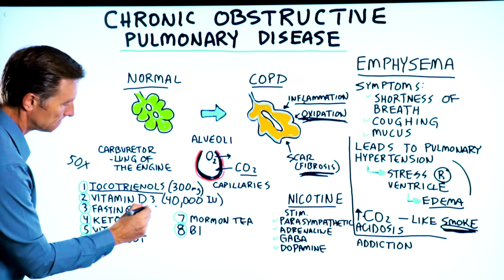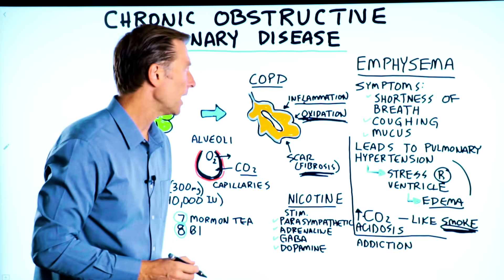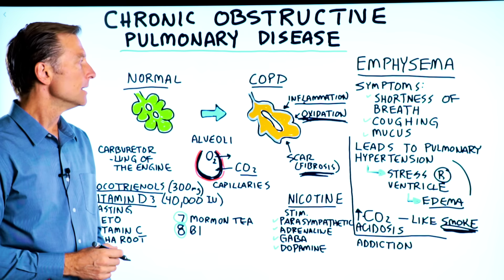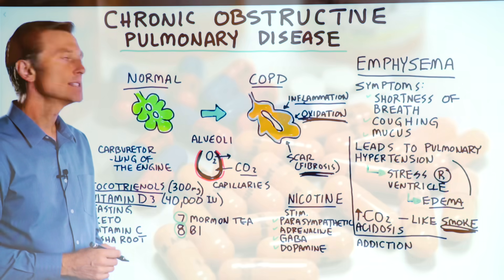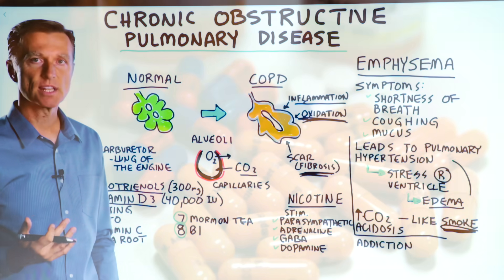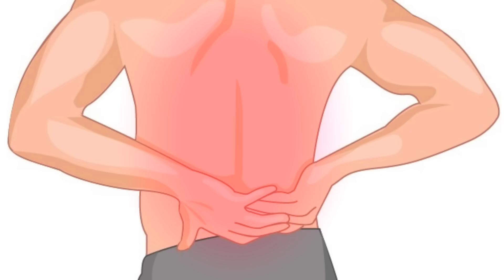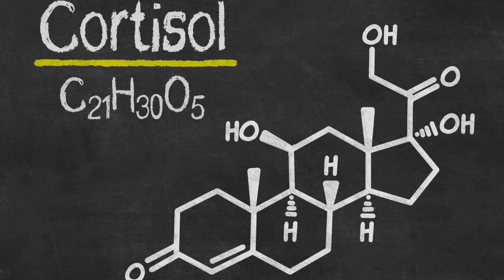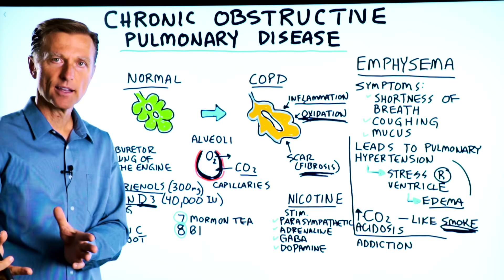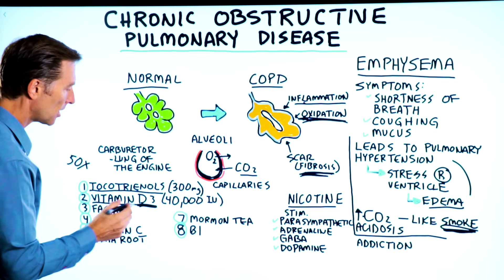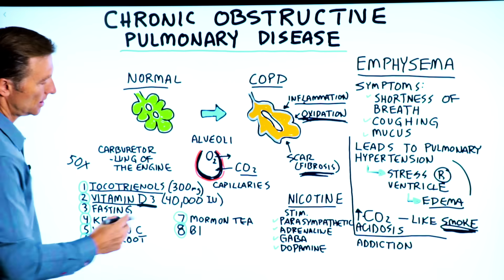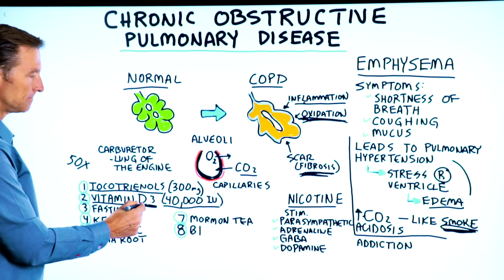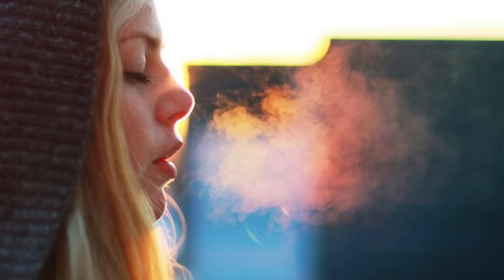The next remedy is vitamin D3. I would venture to say that 100% of patients with COPD are severely deficient in vitamin D. You have a lot of receptors for vitamin D in the lung. One of the treatments for COPD is steroids — like prednisone and other types of steroids that are like bronco-steroid inhalers — because steroids are anti-inflammatory. Vitamin D is the closest thing to that steroid cortisol. It acts like an anti-inflammatory but without the side effects. You want to take about 40,000 international units of vitamin D3 every single day — that's going to reduce inflammation and help you breathe.